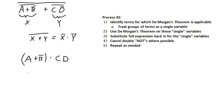There's no more application of De Morgan's theorem here. I can expand this out into sum of products form: this would equal A·C·D ORed with NOT B·C·D.